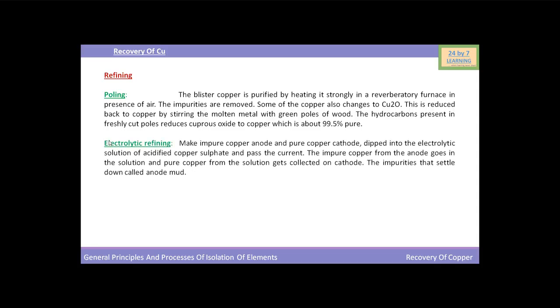The second method of refining is electrolytic refining. Make impure copper the anode and pure copper the cathode, dipped into an electrolytic solution of acidified copper sulfate, and pass the current. The impure copper from the anode goes into the solution, and pure copper from the solution gets deposited on the cathode. The impurities from the anode settle down, which is called anode mud.